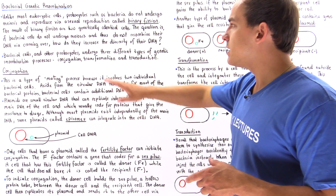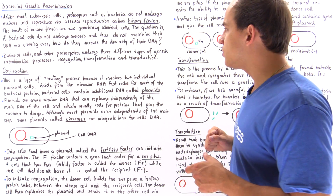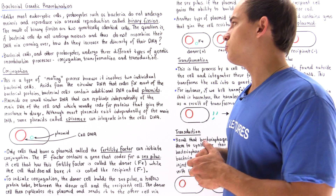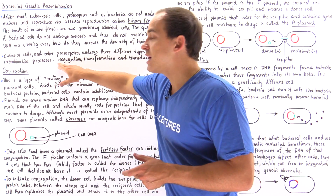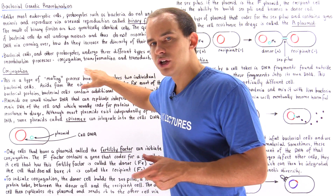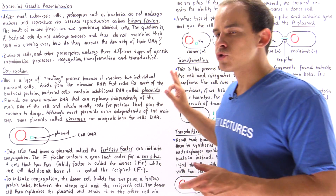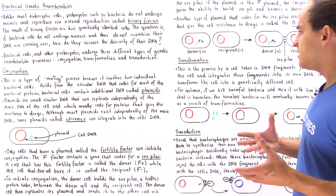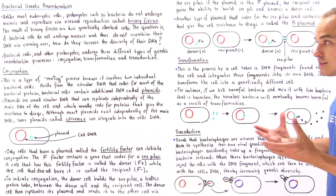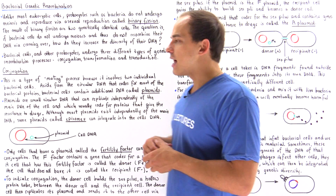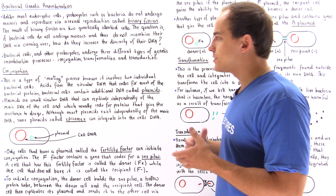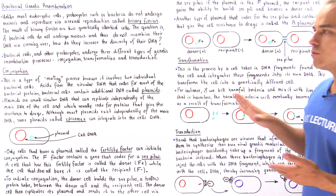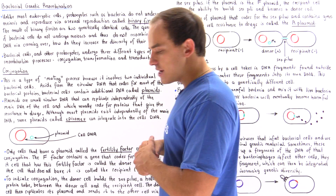Instead of meiosis, bacterial cells and other prokaryotic cells diversify their DNA using one of three different genetic recombination processes: conjugation, transformation, and transduction. Let's go over each process and see how the bacterial cell is able to diversify its DNA, beginning with conjugation.